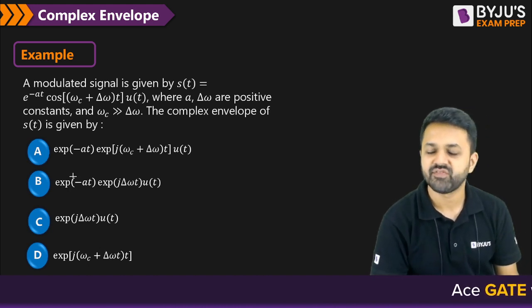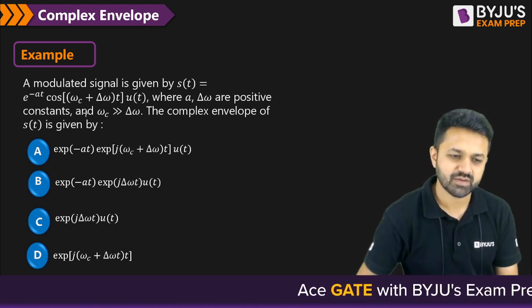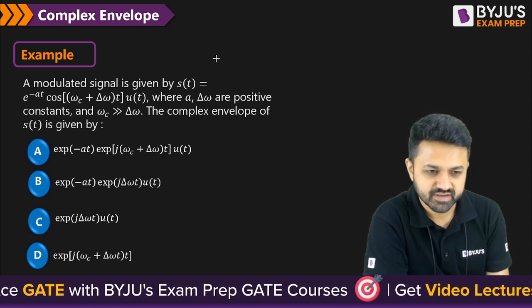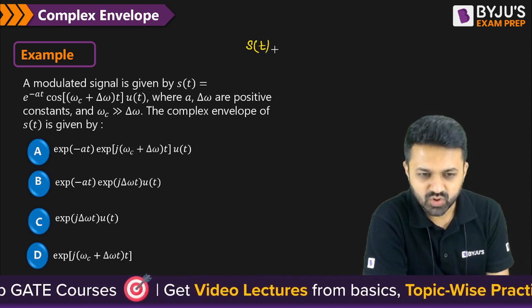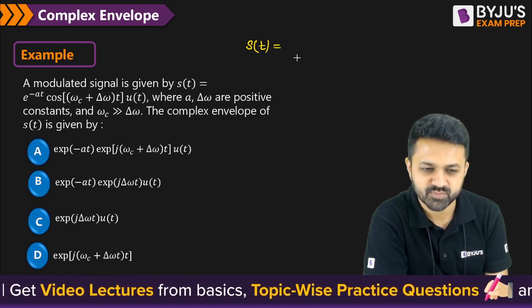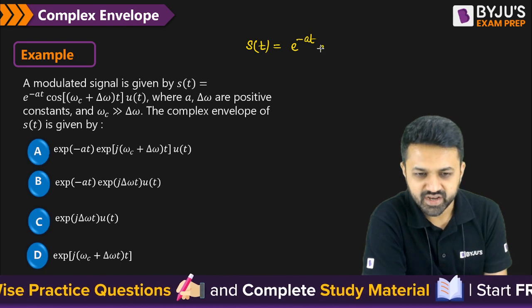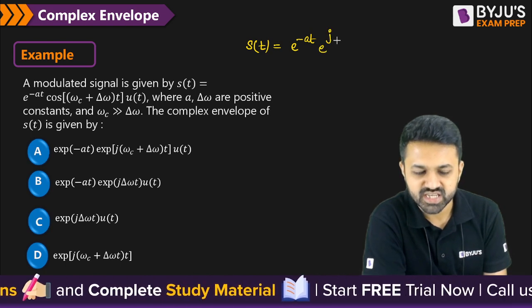And the remaining inside the real part of that complex will be called as the complex envelope. So for that, I am having an example. Like this is the modulated signal. So definitely it is a bandpass signal. So let me write it in terms of complex envelope. So I want to write it in terms of exponential. So we know that e^(-at). And how can we write the cos?